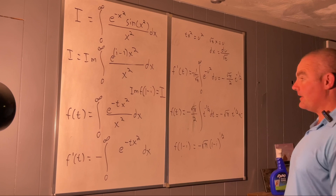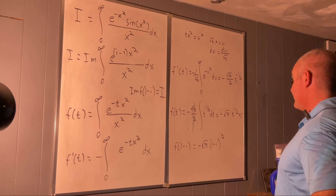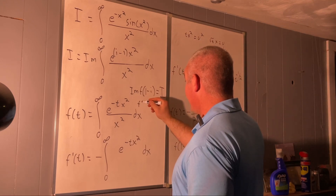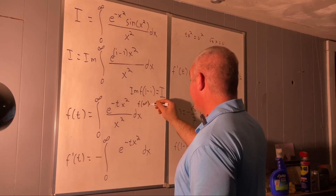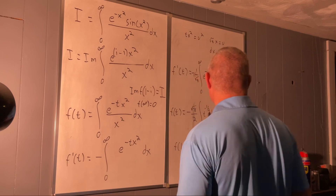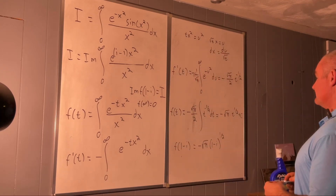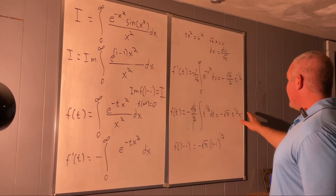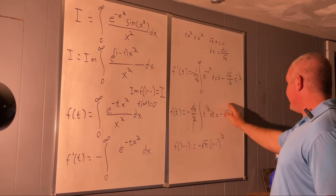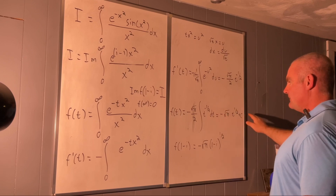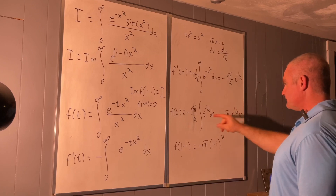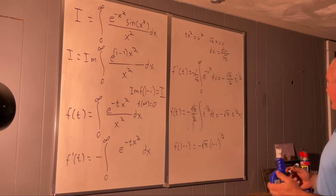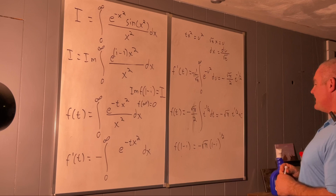The only value I can think of is infinity. F evaluated at infinity is going to give us zero. So if we evaluate at infinity, we get zero equals negative square root of pi times infinity, meaning C equals positive infinity.